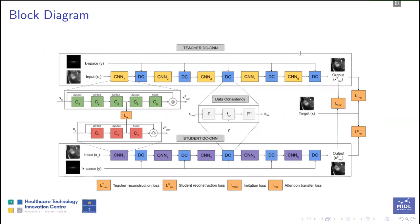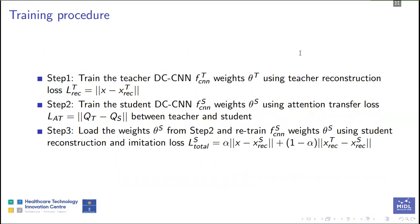The outline of the proposed method is depicted here. Attention transfer is done between the middle layers of each cascade, and imitation loss is obtained between predictions of teacher and student DCCNN. The training procedure involves three steps: first, train the teacher DCCNN using teacher reconstruction loss; second, train the student DCCNN using attention transfer loss; third, load the weights from step 2 and fine-tune the student DCCNN using student reconstruction loss and imitation loss.